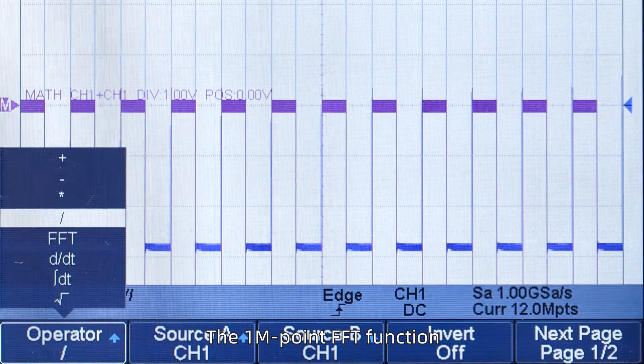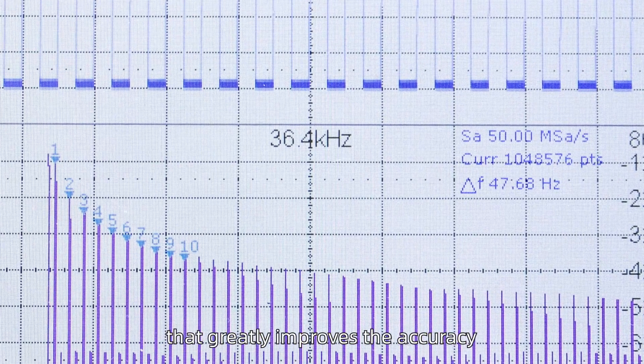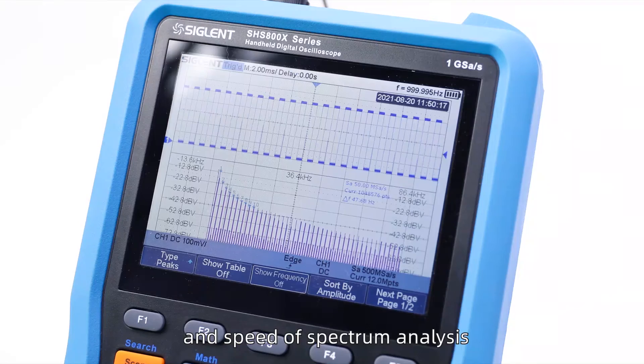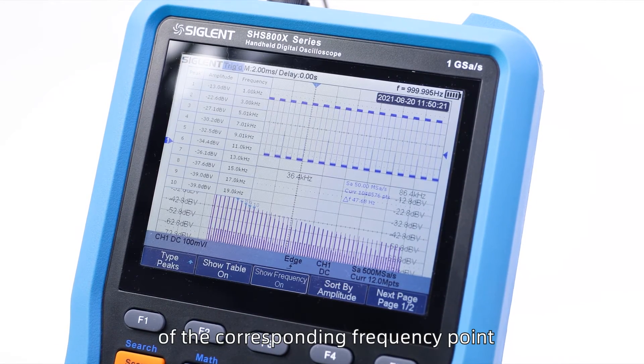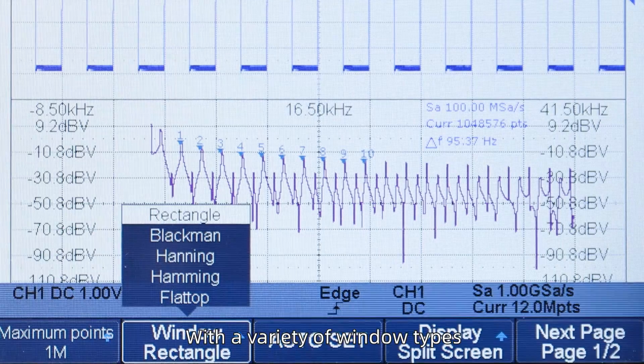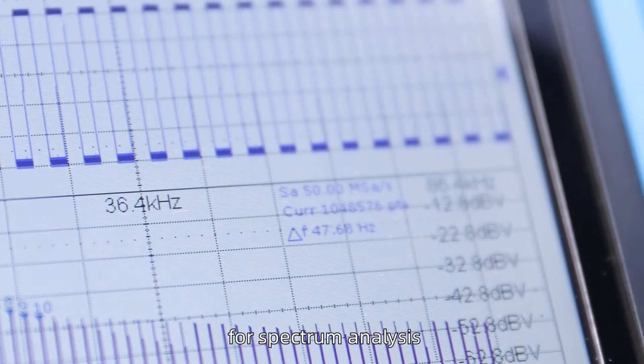The 1-megapoint FFT function uses an embedded math coprocessor that greatly improves the accuracy and speed of spectrum analysis. The peak value and marker function can directly display the amplitude of the corresponding frequency point. With a variety of window types, it can meet the needs of various requirements for spectrum analysis.